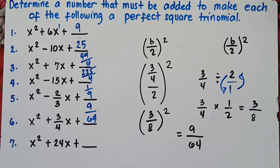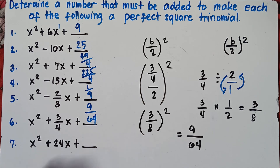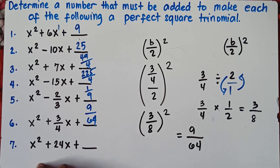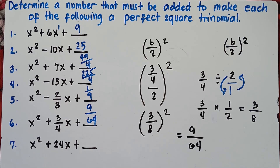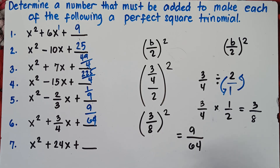That's how you complete the equation to be a perfect square trinomial. Try number 7 and put your answer in the comment section down below — let's check if you really understand the topic. If you like this video, do not forget to like, share, and subscribe. Share it with your friends and classmates so we can help more students. This is Teacher MJ — bye-bye!